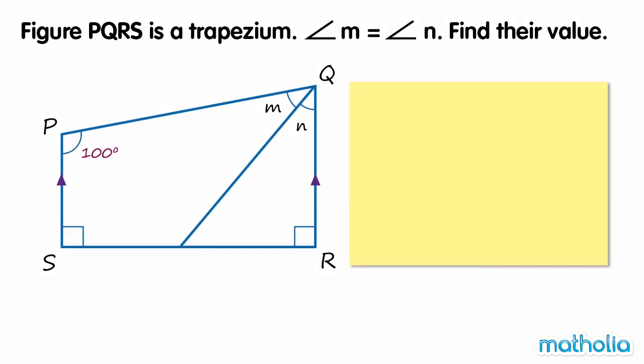Figure PQRS is a trapezium. Angle M equals angle N. Find their value. In the figure, we can see that PS is parallel to QR.